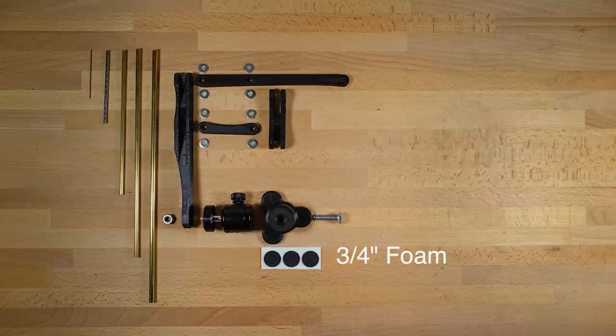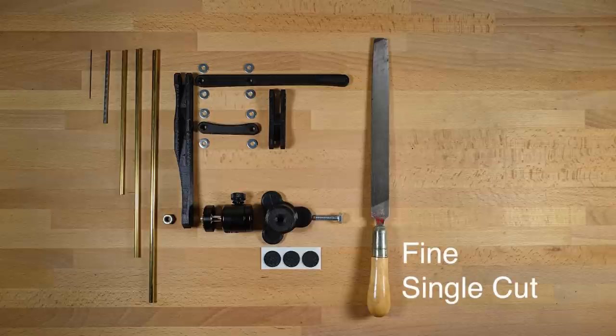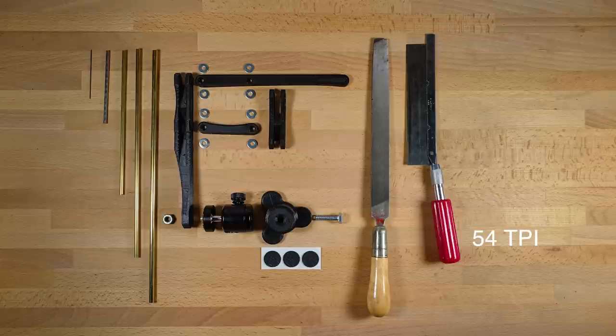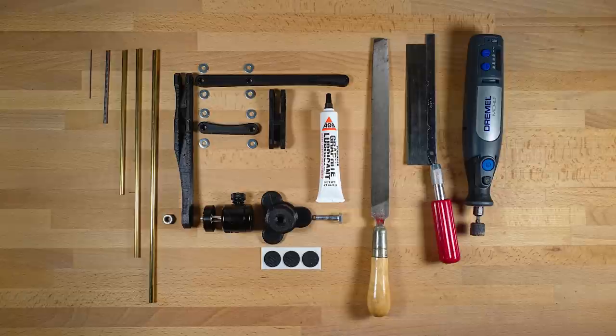Now let's talk about tools. We have sort of two critical tools: there's this file for cleaning up the ends of things, and a saw for cutting the tubing. There are also some strictly optional things, like some graphite powder, a motor tool, and a deburring tool, but if you don't have that stuff that's fine.